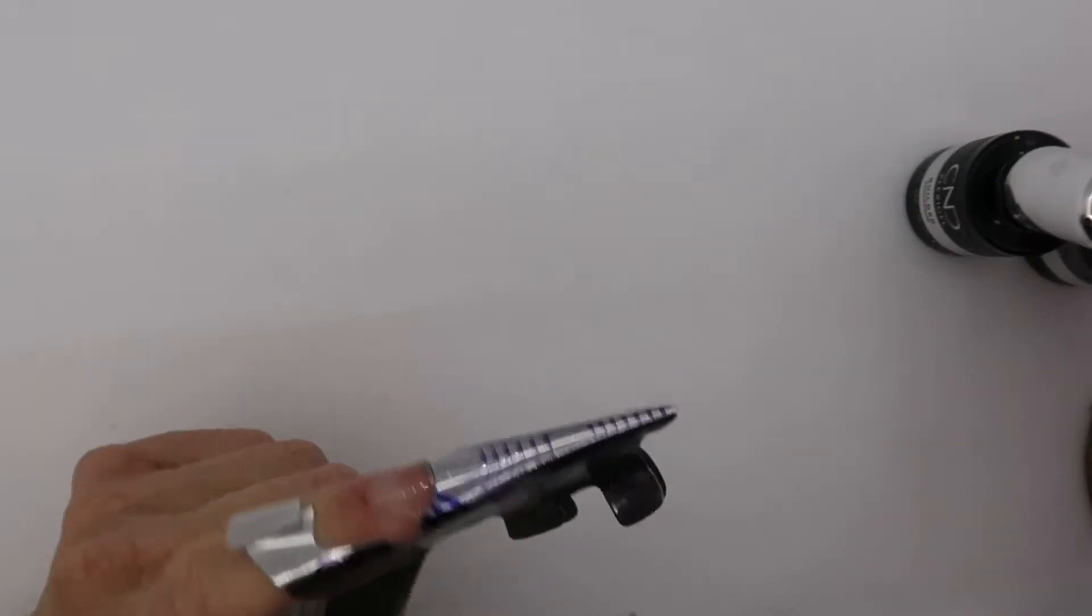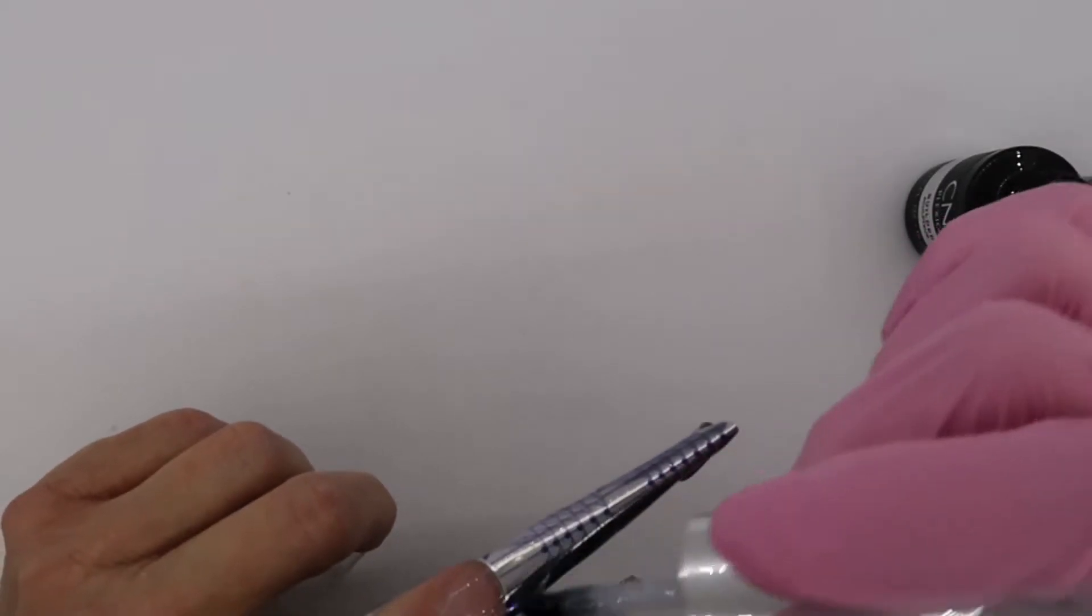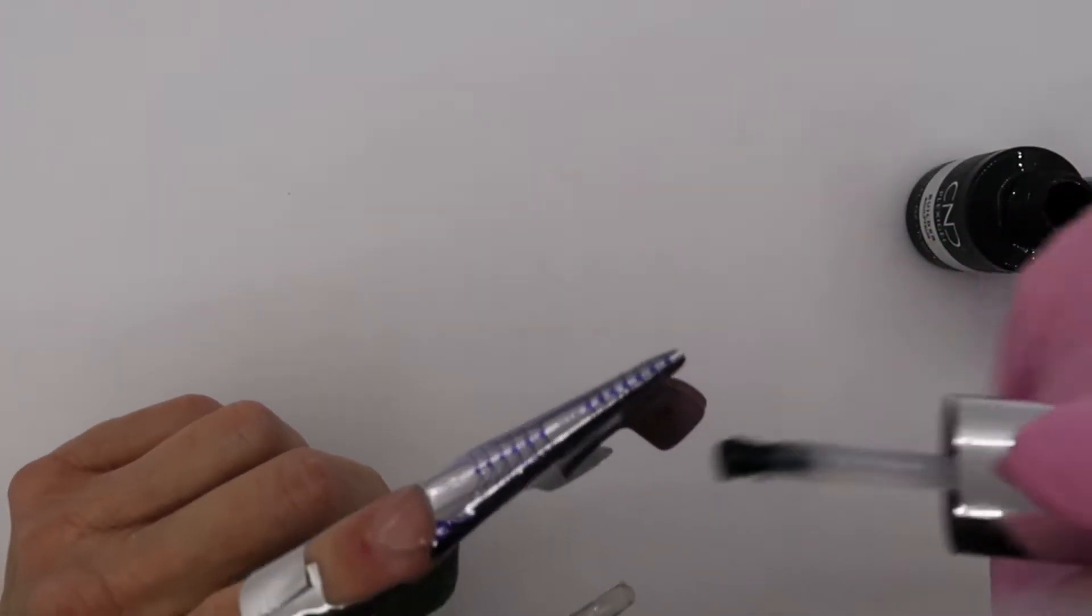When building your nail, use CND's Shaper Plexigel to lay the foundation of the shape you want. I'm making a tapered coffin.